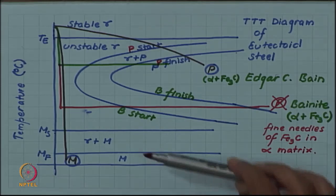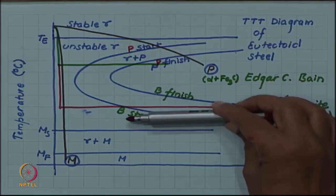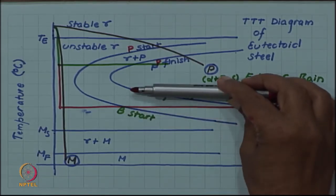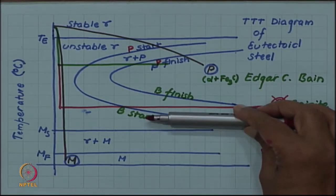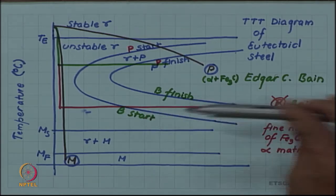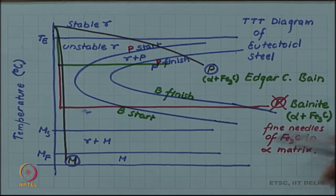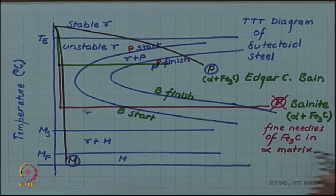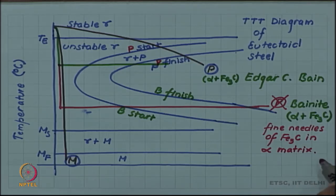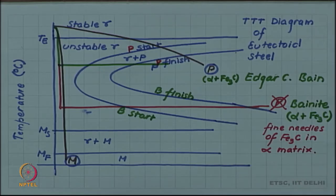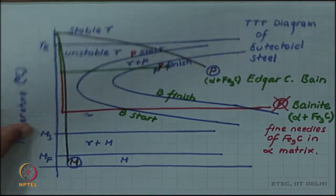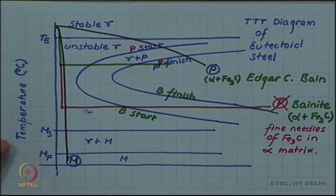There are different forms of bainite depending upon the temperature. Close to the nose we have upper bainite, and lower down above Ms we have lower bainite, and there are differences in their microstructure. But the form of bainite we will accept for our purpose is fine needles of Fe3C in the alpha matrix. This is how bainite differs from pearlite, which has alternating plates of alpha and Fe3C.